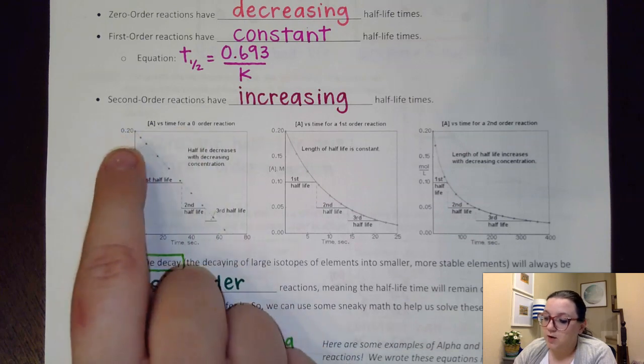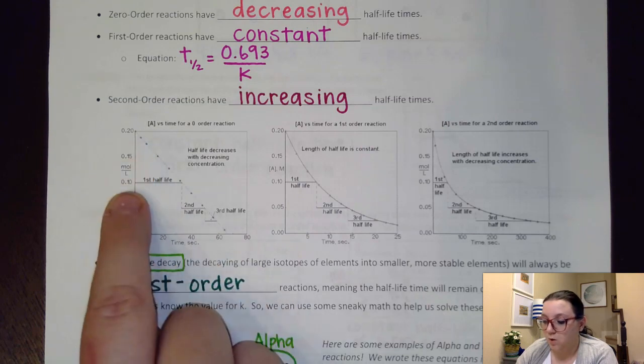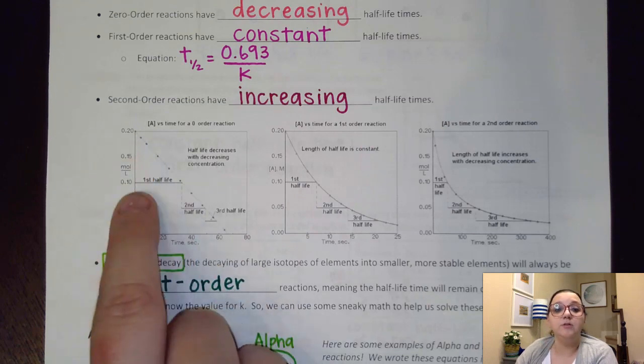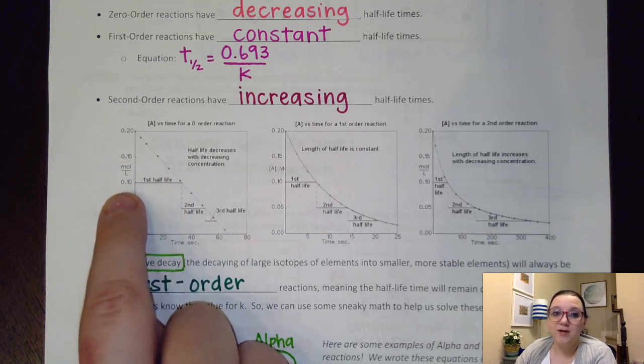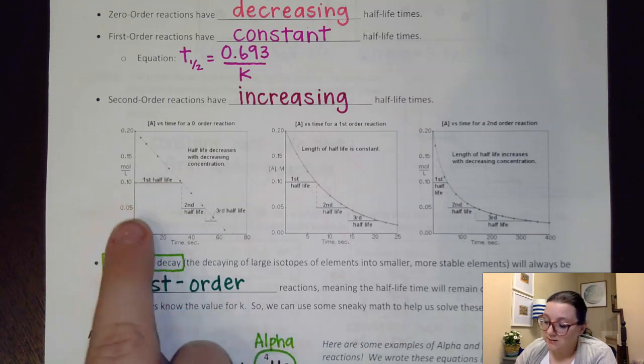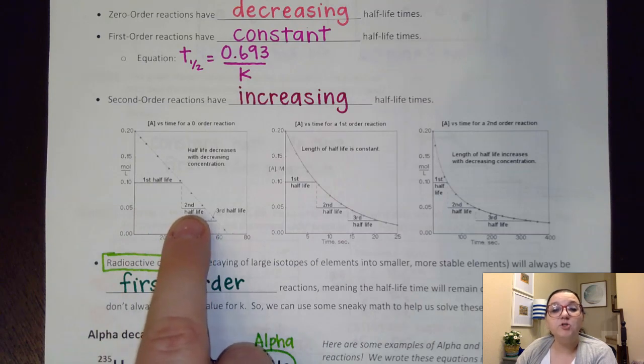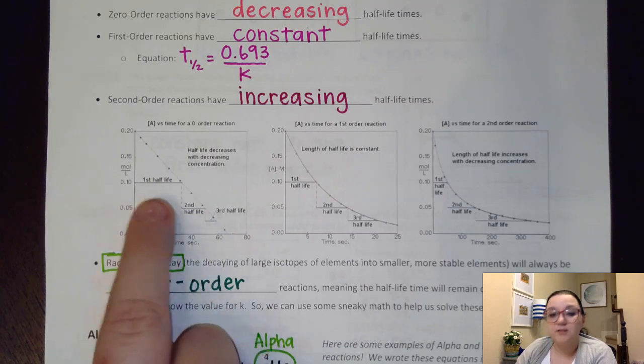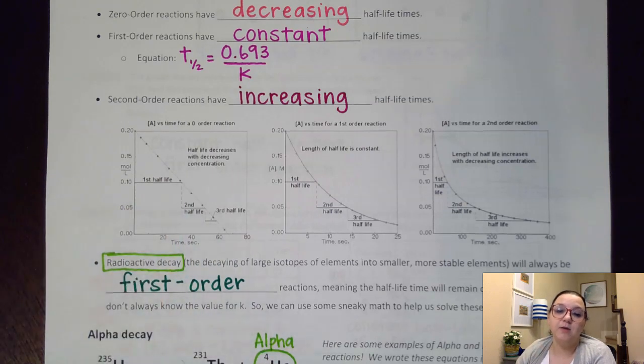And you notice that we are starting with a concentration of 0.2. If I cut that in half, that would put me down to 0.1. And so that has a particular time frame associated with it. Well, if I want to cut that 0.1 in half again, that would bump me down to 0.05. And I see to go from 0.1 to 0.05 takes this amount of time that's much shorter than what it took to half the first time. And so that's where that decreasing half-life time comes into play.